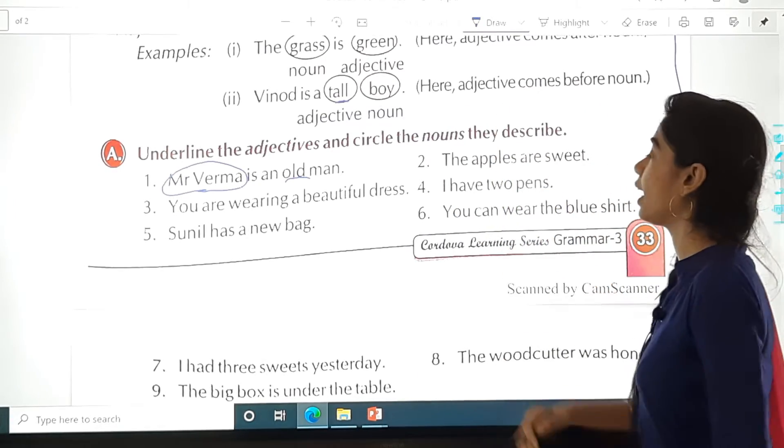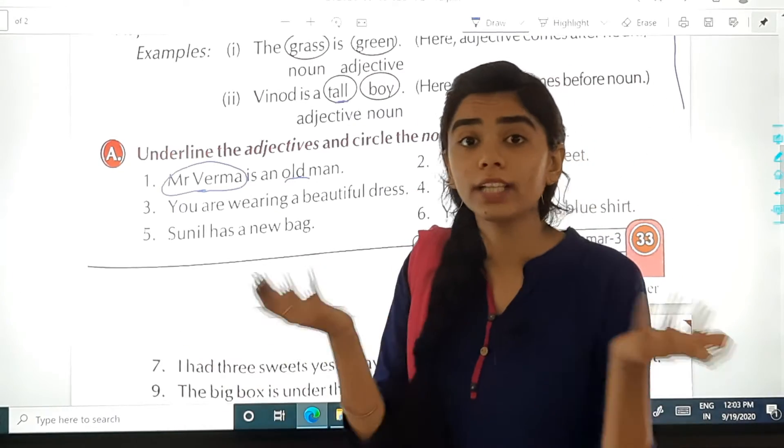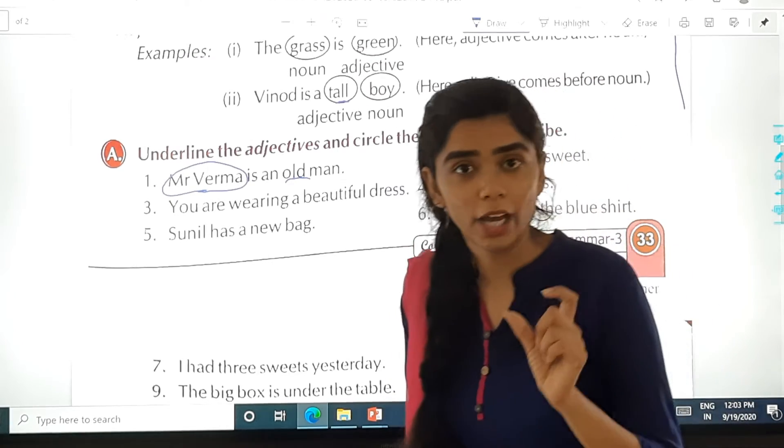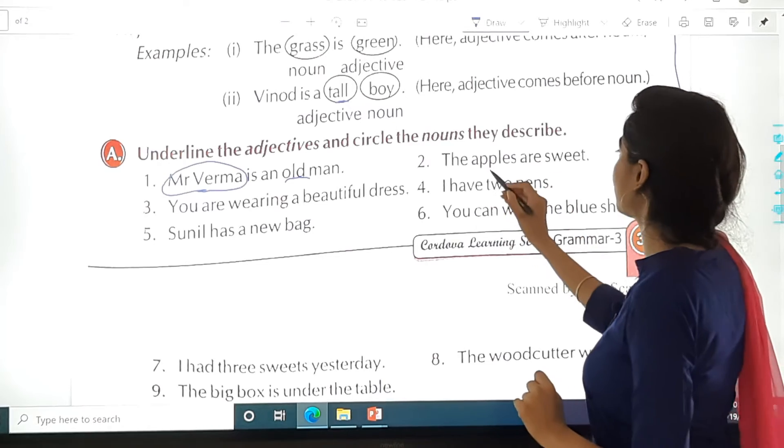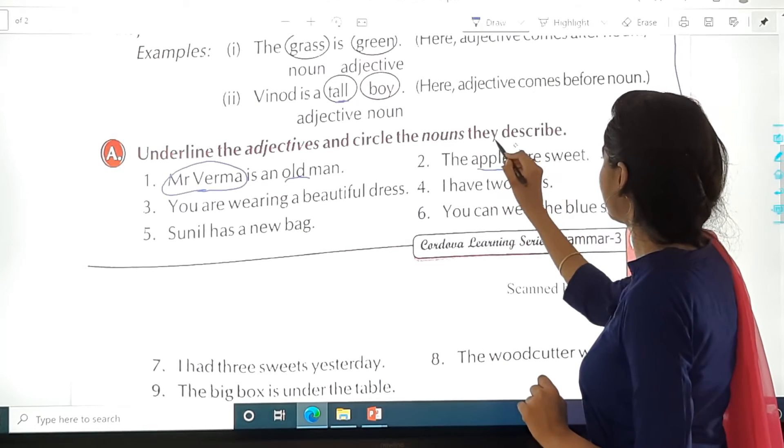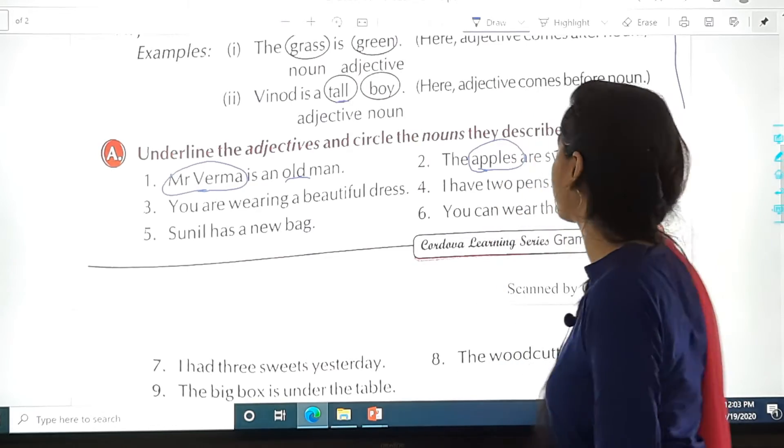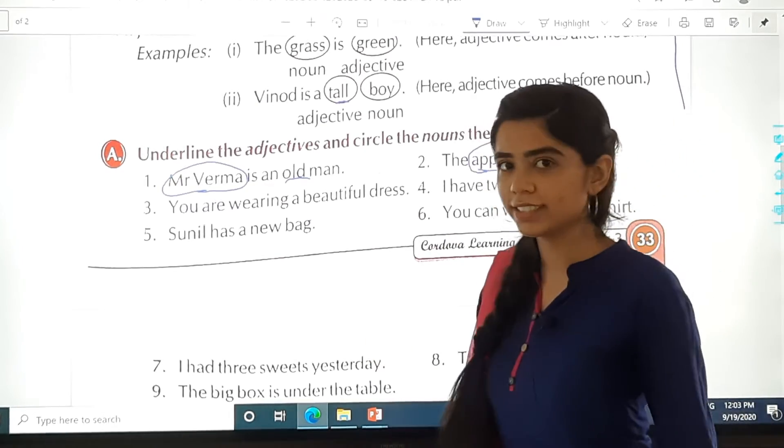Now in the same way, the apples are sweet. How are the apples? They are sweet. So our noun is apples. So we will circle it. And we will underline the adjective. That is sweet.